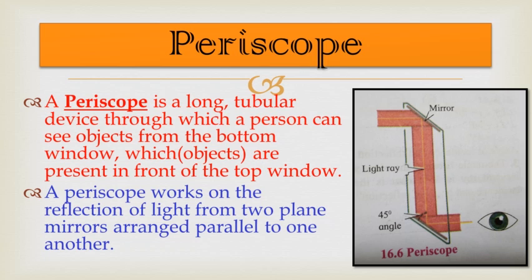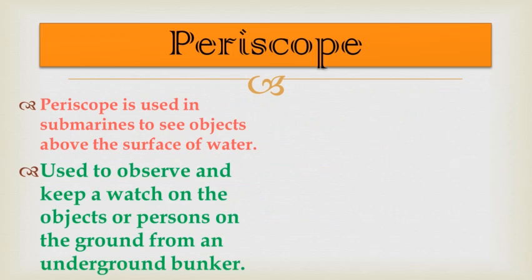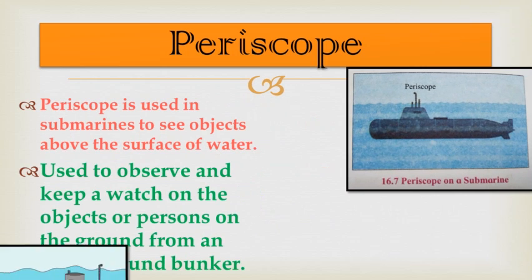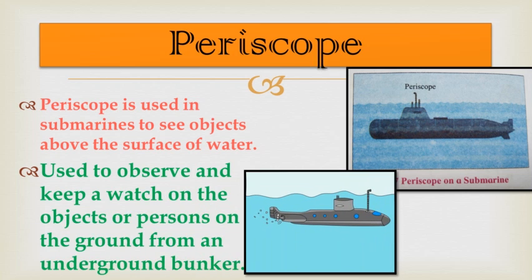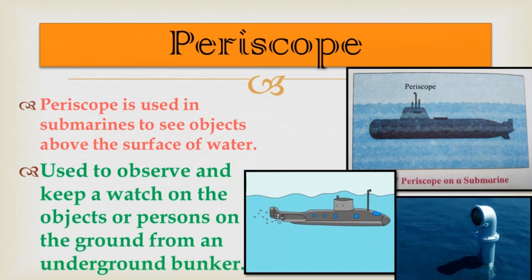In the structure of a periscope, two mirrors are arranged at an angle of 45 degrees. From the eyepiece at the bottom, we can observe images present at the top. Periscopes are used in submarines to see objects above the surface of water, and also to observe objects or persons on the ground from an underground bunker.